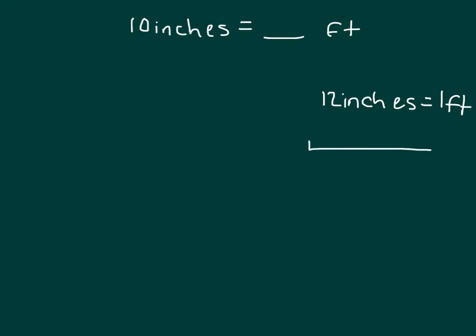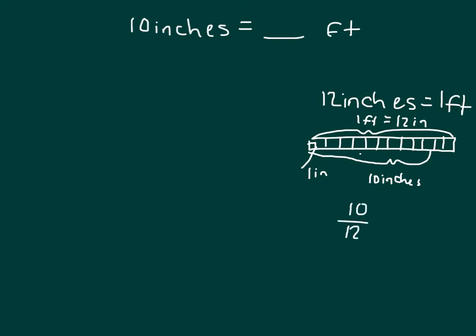If we draw a tape diagram for a foot, we have 1 foot. And there would be 12 of these inches inside of a foot. Where each of those is 1 inch. So 10 of them. 1, 2, 3, 4, 5, 6, 7, 8, 9, and 10. 10 of those inches. Right? Out of the whole. Remember, the whole was 12 inches. So we would have 10 over 12 from our model.